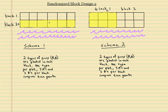In this region of land, on the bottom here, we have a body of water, and I have two block schemes. In the first scheme, the bottom section along the water is one block, and the section away from the water is another block. In the second scheme, the left part of the region is considered a block, and the right side of the region is considered a block.